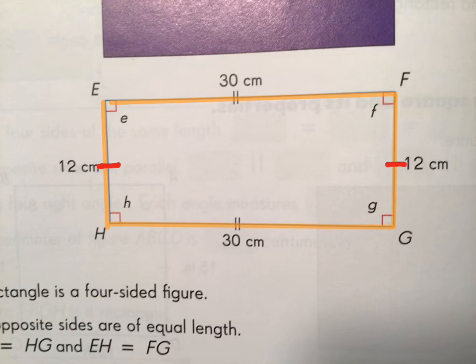So that says that this side length is the same as this side length. And side EF is shown with two tick marks, and side HG has two tick marks, and that shows us that those two sides are equal in length.